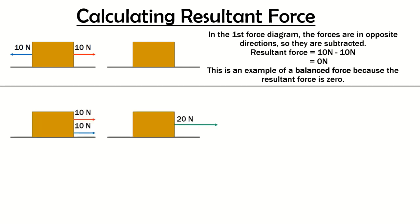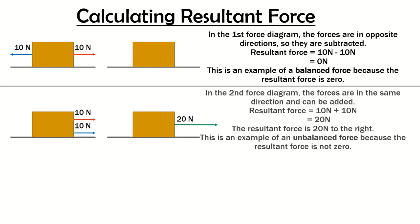In our next example, again there are two forces of 10 newtons, but this time both forces are acting to the right. So in the second force diagram, forces are in the same direction and therefore they can be added. The resultant force is 10 newtons plus 10 newtons, which gives us an overall resultant force of 20 newtons.